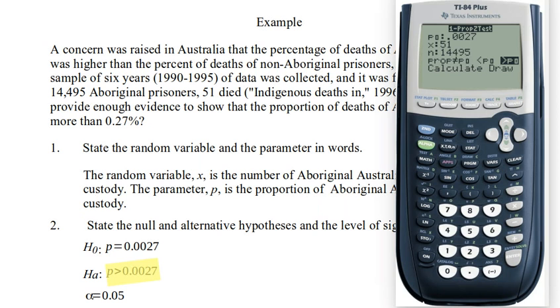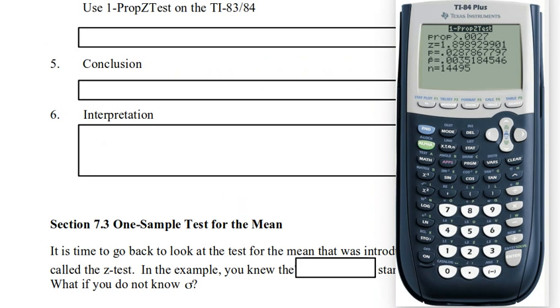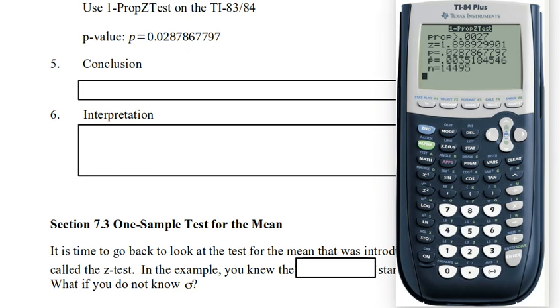which is our p-null. So we want to go over to greater than and select that. And now let's calculate this. So this gives us a p-value of 0.0287. So let's enter that. There's our p-value, about 2.8%, 2.9%.